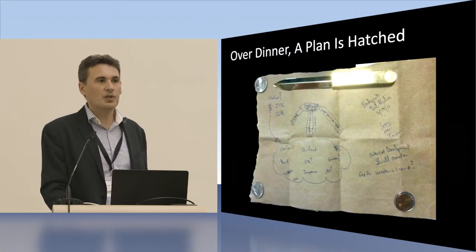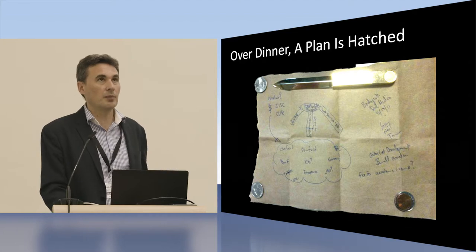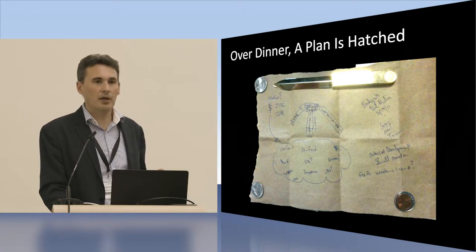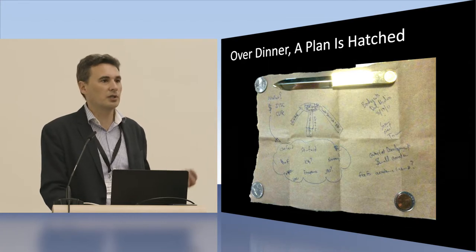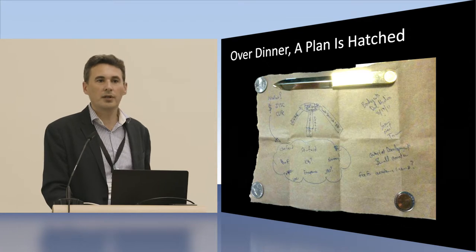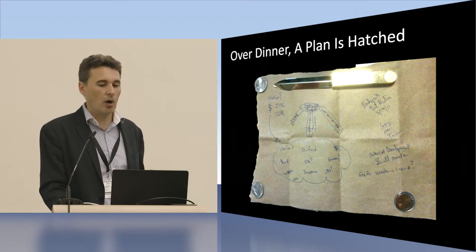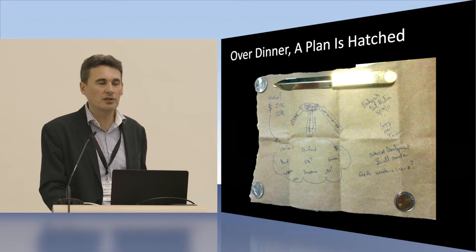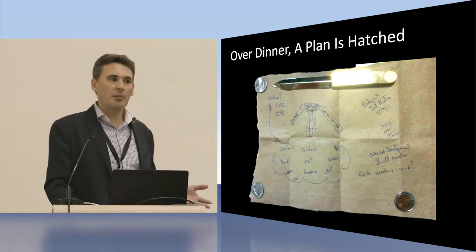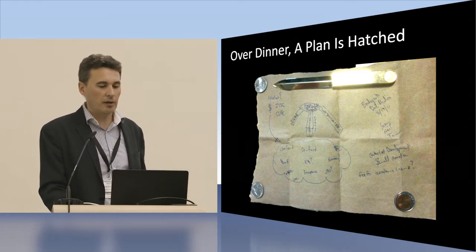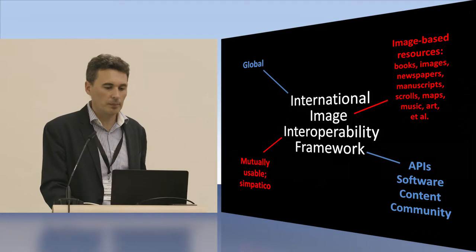At one of these dinners, people from those different projects came to Stanford over the course of about a year, a year and a half. One night at dinner we sat down and said: medieval manuscripts are very exciting and unquestionably scholarly, but we all have way more content than just medieval manuscripts. Maybe we're thinking about this at too small a scale. We went to a Cuban restaurant — it's an apocryphal story, but it was true. It was actually a paper tablecloth, not a napkin. We started doodling and figured out what it would look like at global scale. About four months later, IIIF was born.